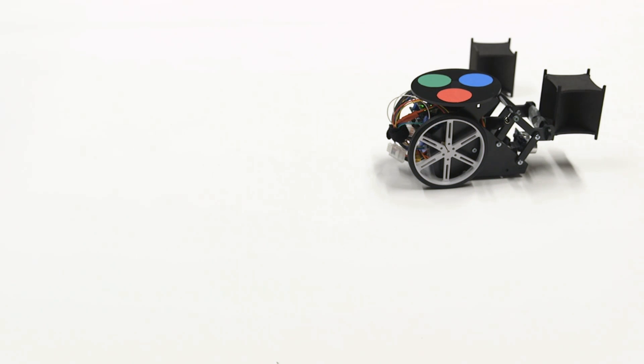This project also uses an add-on product that's called StateFlow to model the rover's different operating states. For instance, when it is turning or moving forward or to drop the forklift and so on.